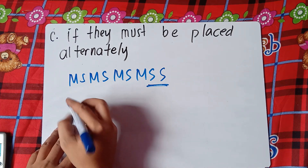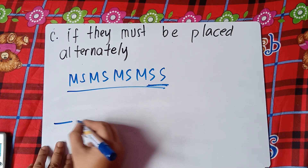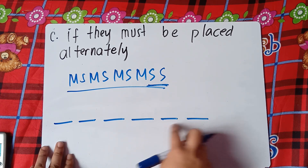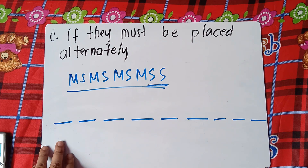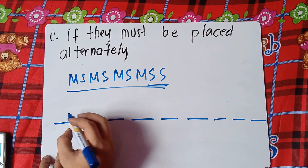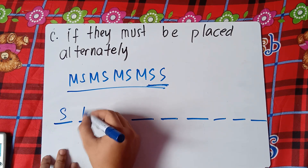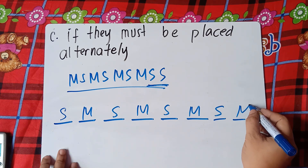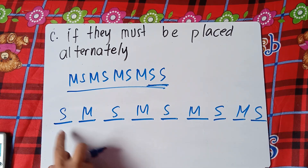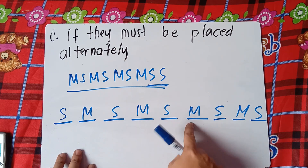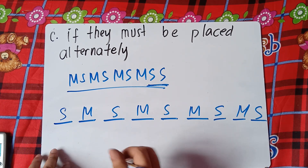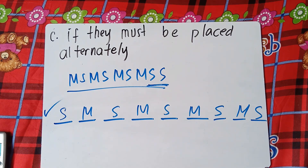We can arrange this one correctly with nine positions. Science comes first before math: science, math, science, math, science, math, science, math, then science. Let's count: four math books and five science books. That's the correct alternating arrangement.